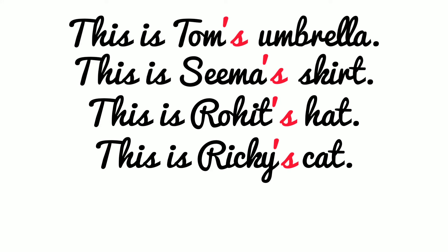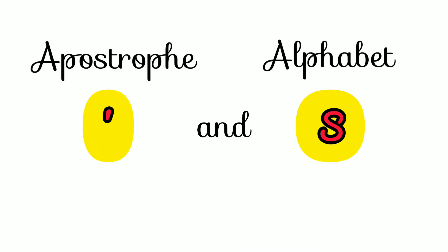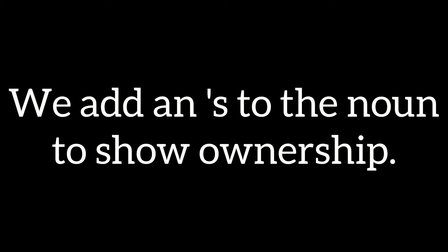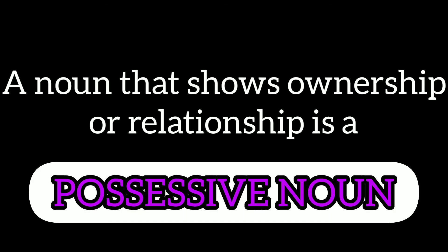Children, here you can see I have used apostrophe s, a special sign, to talk about these things. It is called an apostrophe and an s. We add an apostrophe s to the noun to show ownership. A noun that shows ownership or relationship is a possessive noun.